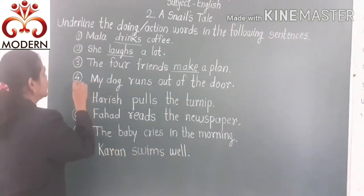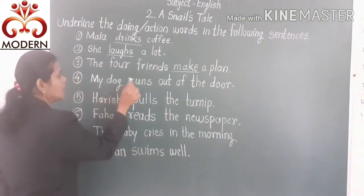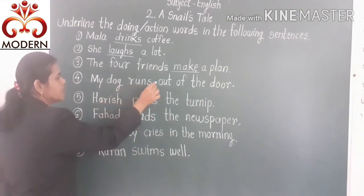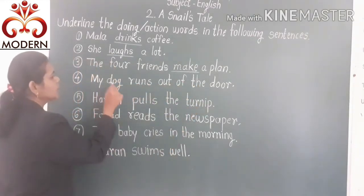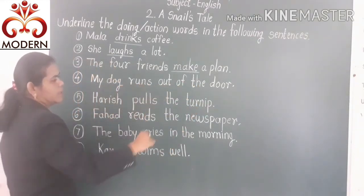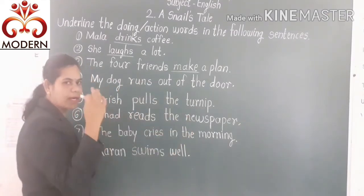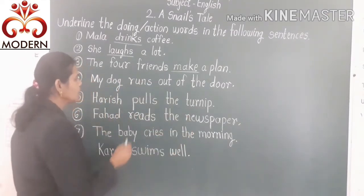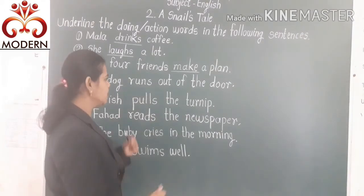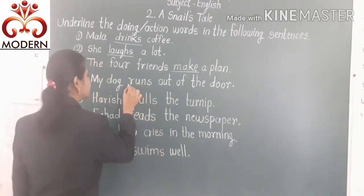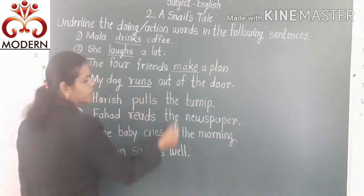Then the next sentence is: My dog runs out of the door. The dog ran — 'runs' is the action word. So underline it.